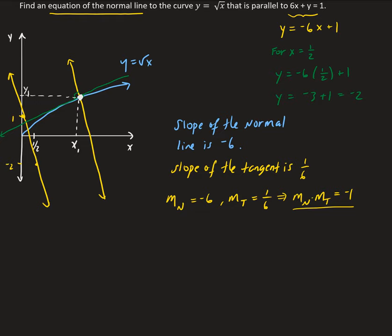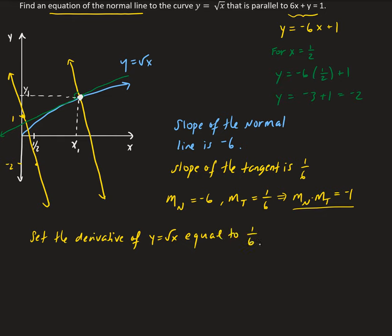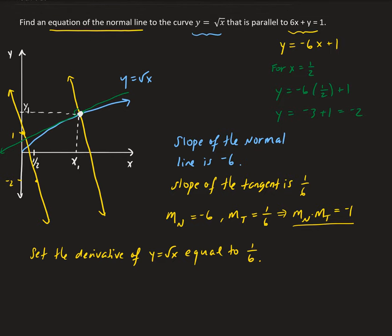So the next step is to set the derivative of y equals square root of x equal to one-sixth, because that is the slope of the tangent line. So let's take the derivative: y equals square root of x is the same as x to the power of one half. Using the power rule, we get one half x to the negative one half, which is the same as 1 over 2 root x.